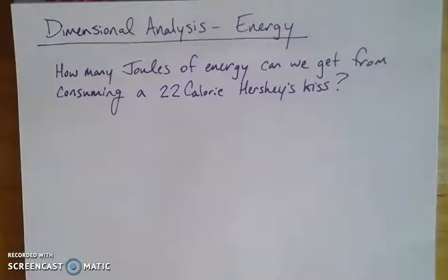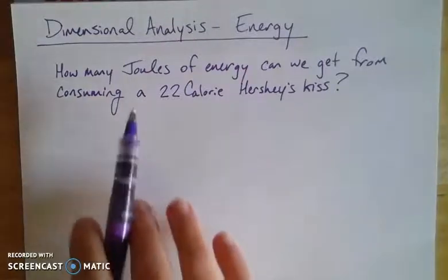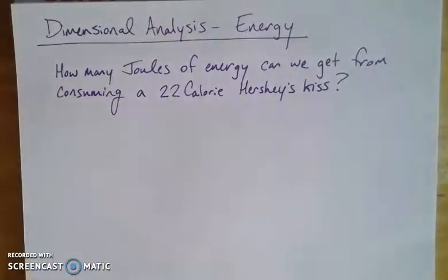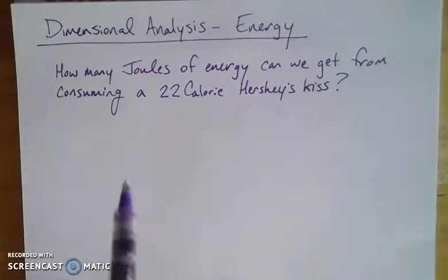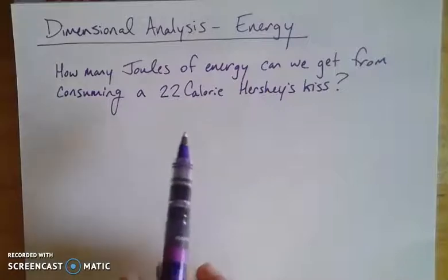Let's do some practice with dimensional analysis on a problem that has to do with units of energy. The SI unit for energy is called the Joule, abbreviated with a capital J. But we in the United States don't think about energy in terms of joules — we think about it in terms of calories. Using dimensional analysis, or the factor label method, we can solve problems that look like this one.